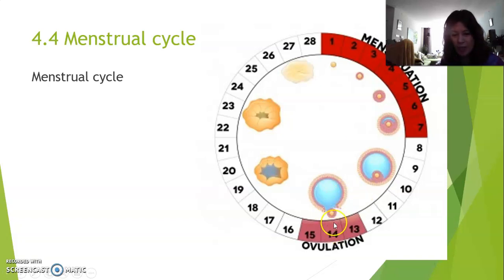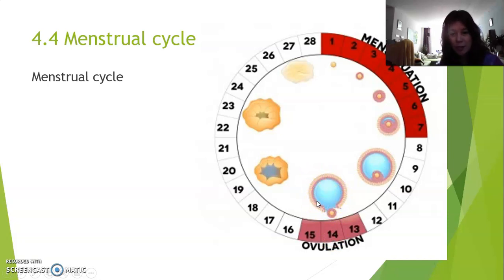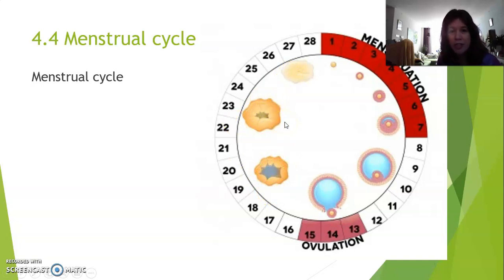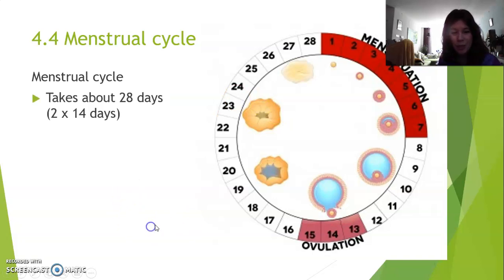Now the egg is waiting inside the oviduct for two days. In the meantime, the empty follicle that remains inside the ovary is not destroyed — it has a job. It also changes shape. The empty follicle now starts producing a hormone, and that hormone is progesterone. Progesterone is necessary for pregnancy. This remaining part of the follicle has a name: it's called the yellow body, or in Latin, the corpus luteum. Corpus means body, luteum means yellow.